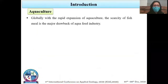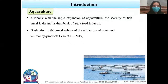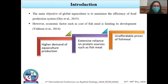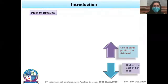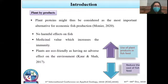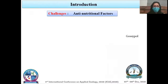Introduction: with the rapid expansion of aquaculture globally, the scarcity of fish meal is a major drawback of the aqua industry. Reduction in fish meal has enhanced utilization of plant and animal by-products. Economic factors such as the cost of fish meal are limiting its development. Plant protein may be considered the most important alternative for economic fish production. Anti-nutritional factors present in plant products include protease inhibitors, phytase, xylan, cellulose, and gossypol. Exogenous enzymes are added in feed to inactivate anti-nutritional factors and improve digestion and nutrient absorption.